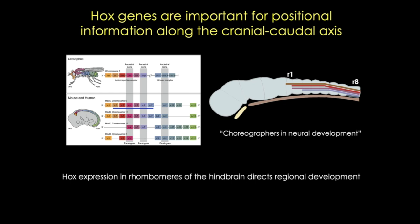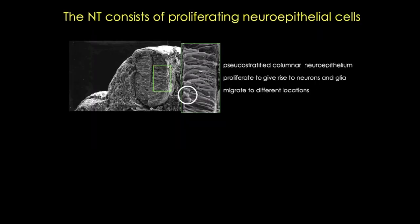That's all on cranial-caudal patterning for now, as it's not yet well understood. Moving to the dorsal-ventral axis, where we understand much more about how fates are established — but first, let's talk about the cells of the neural tube. Here is an electron micrograph of the neural tube. These are neuroepithelial cells: pseudostratified columnar cells that will give rise to all the neurons and macroglia of the CNS.